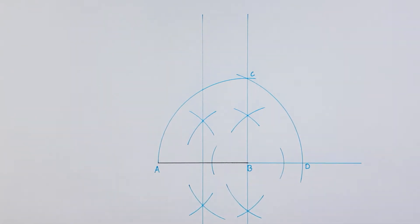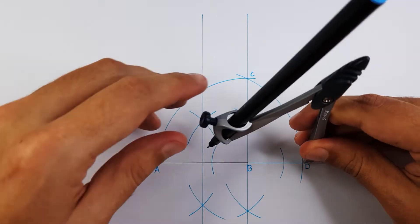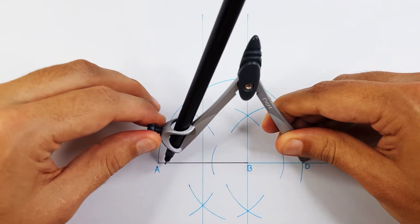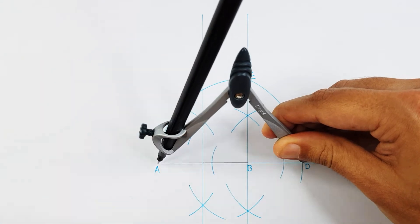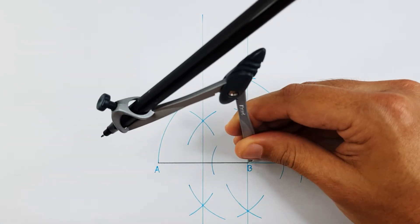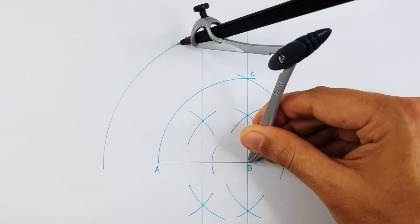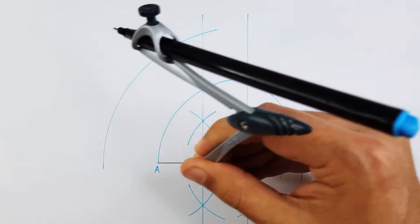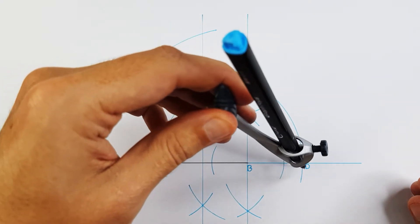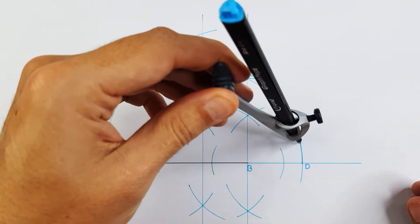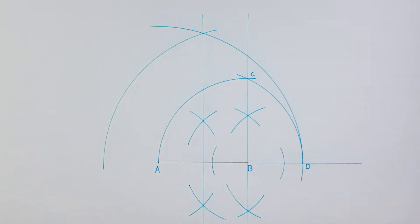Place your compass on point D and adjust it to point A. We will use this measurement on point A and B. Construct two long arcs that will intersect through your first middle point method. You can label this intersection as point E, as this intersection will be the top part of the pentagon.